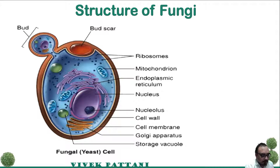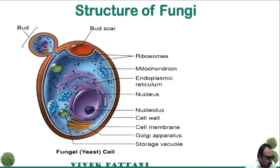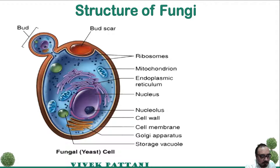Starting with the structure of the fungi: in general, fungi are larger than bacteria. They may be unicellular or multicellular. Yeast, which is basically a unicellular group, has a size ranging from 1 to 5 micrometers in width and about 5 to 30 micrometers or more in length.